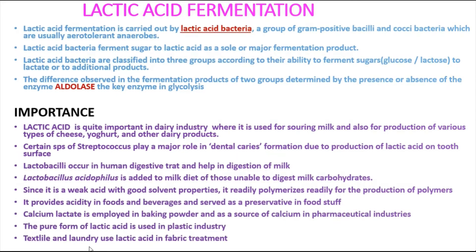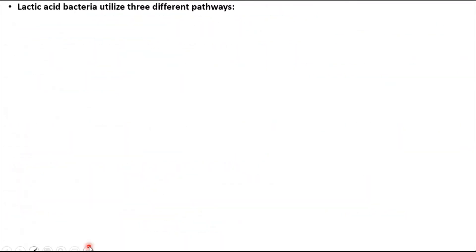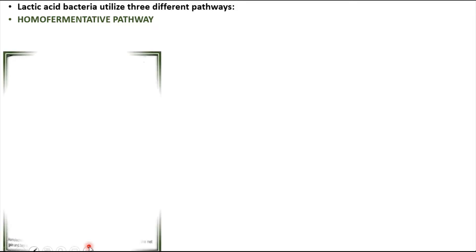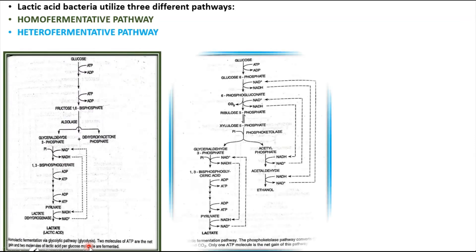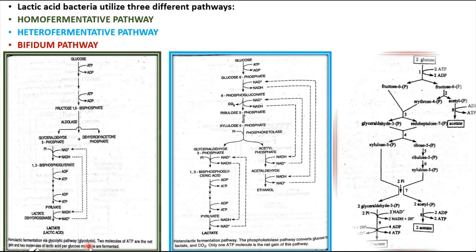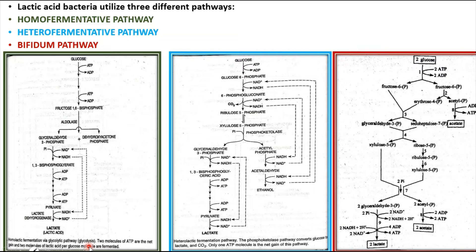Depending upon the type of organism or the type of product, lactic acid bacteria have three different pathways to ferment sugars into lactic acid: number one, the homo-fermentative pathway or homo-lactic fermentation; number two, the hetero-fermentative pathway; and number three, the bifidum pathway. These are the three ways by which lactic acid bacteria convert glucose into lactate.